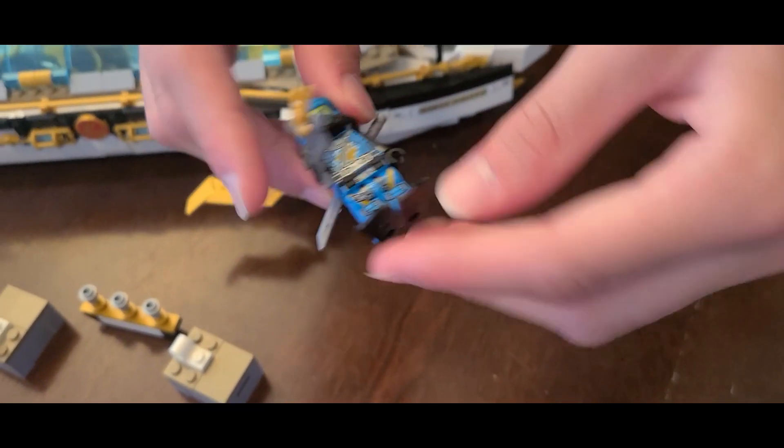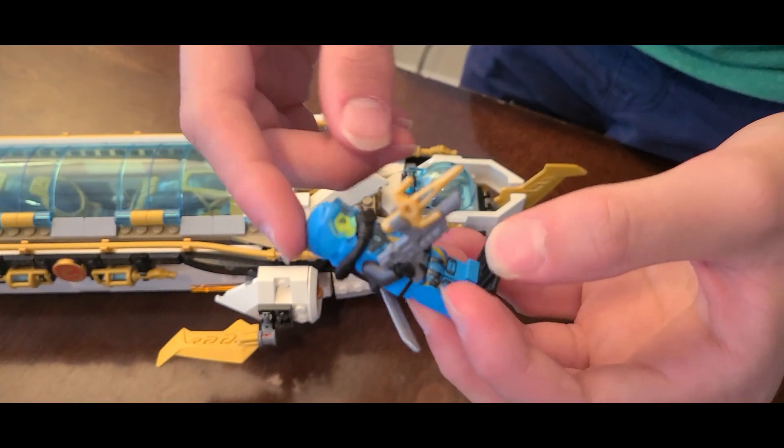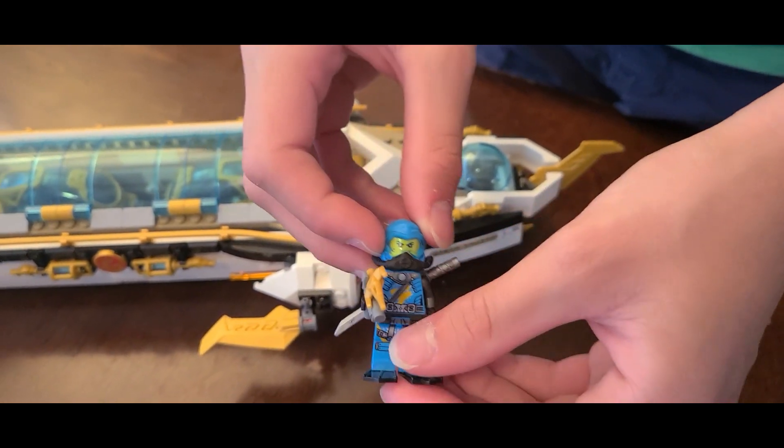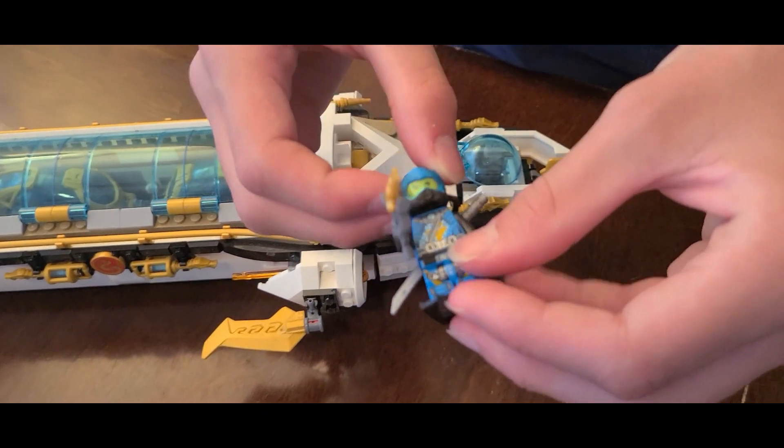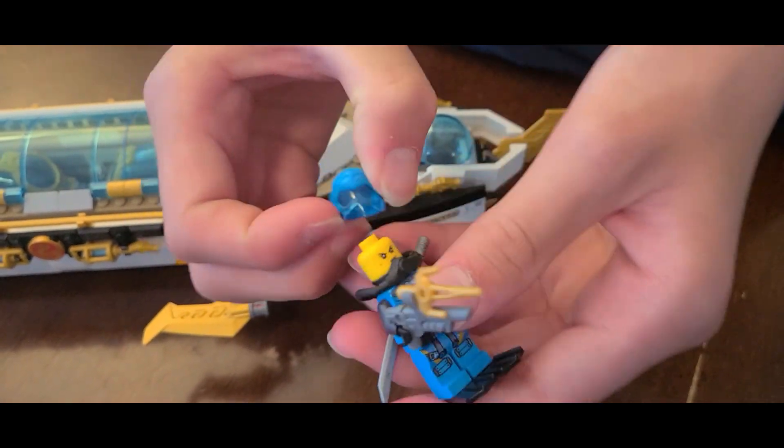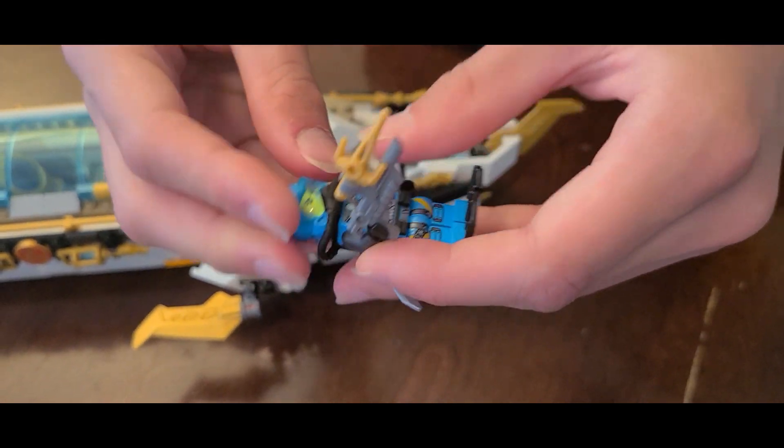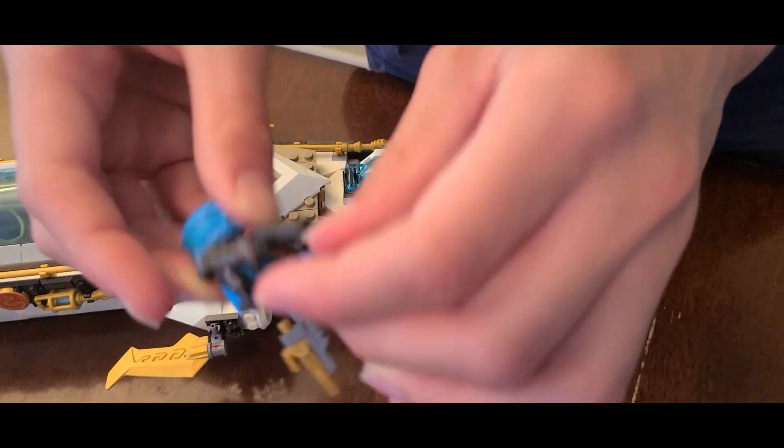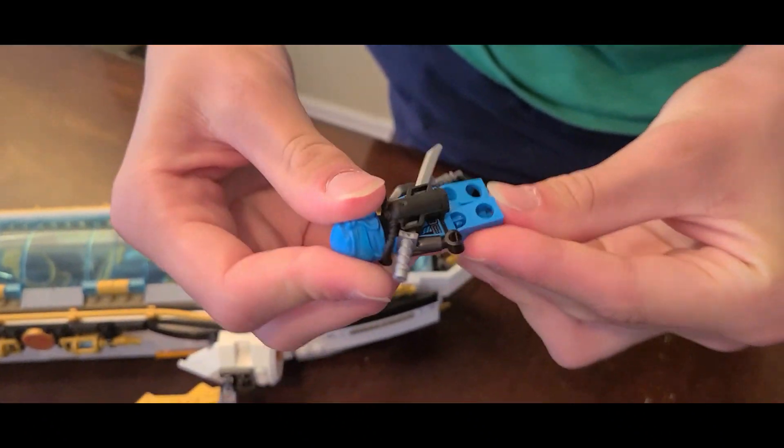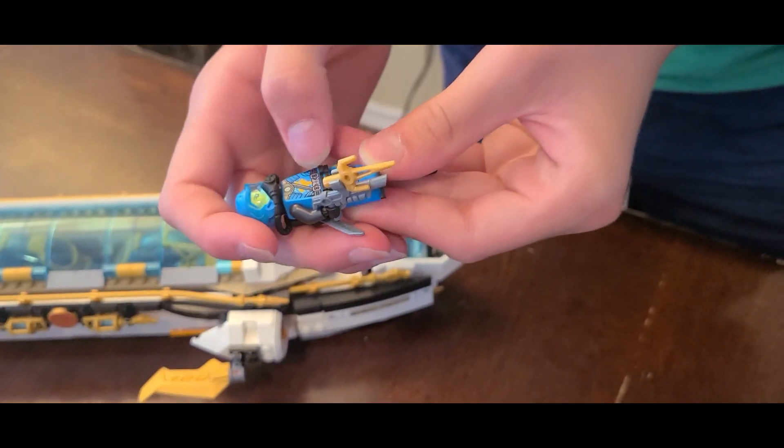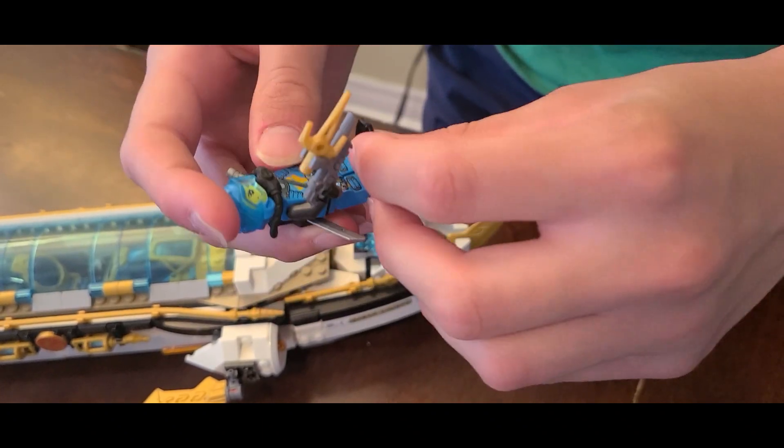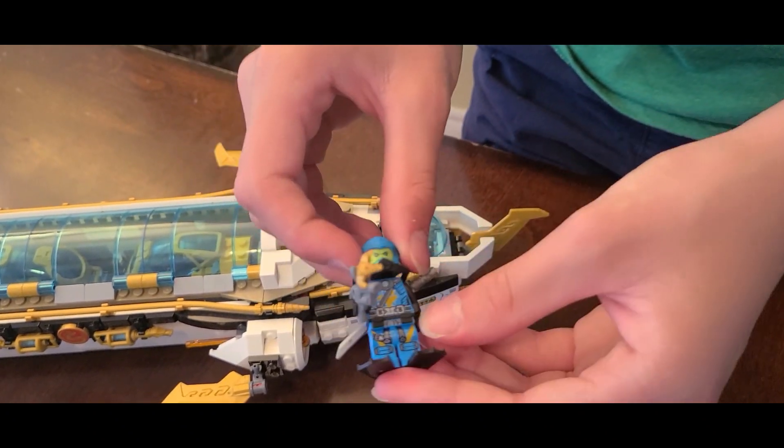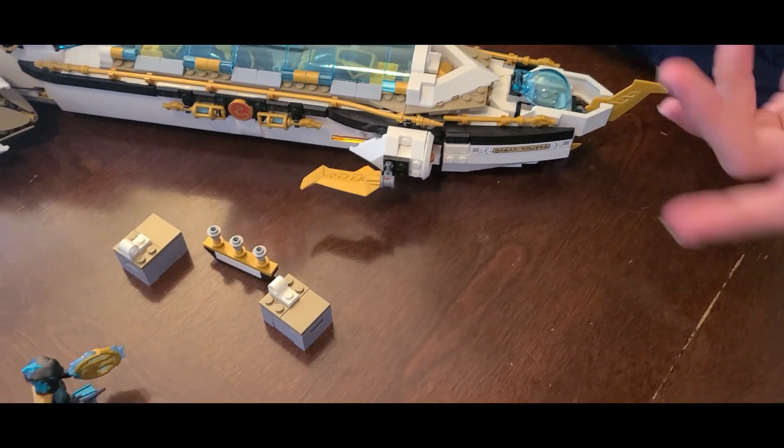And then we've got Nya. So in the set wave, she only appears in this set. She appears in a few of the Europe magazines, but this is the only way to get her if you're only buying the sets, which isn't very good for kids if they want to get all the minifigures. But you know, it's still a nice minifigure. It's just like if you're not going to get this set, you're most probably not going to get this minifigure. This includes all of the ninja in their scuba outfits, so there's that.